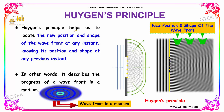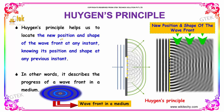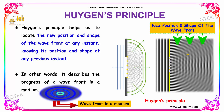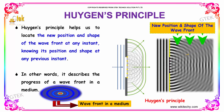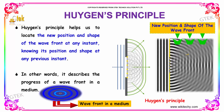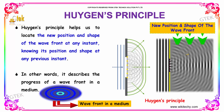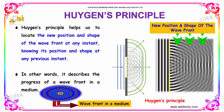Huygens principle helps us to locate a new position and shape of the wavefront at any instant, knowing its position and shape at any previous instant. In other words, it describes the progress of a wavefront in a medium. You are able to see the wavefronts are created — over here, the new wavefronts are created. This is Huygens principle: new position and shape of the wavefront.